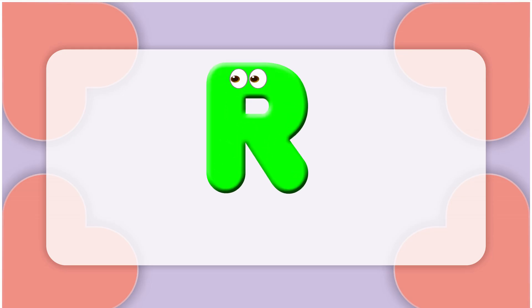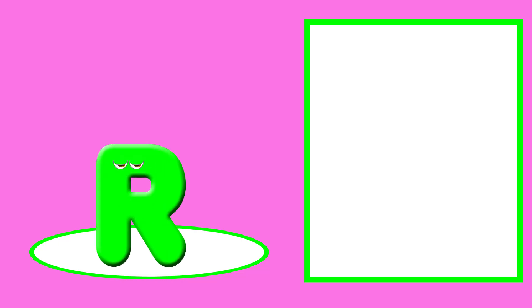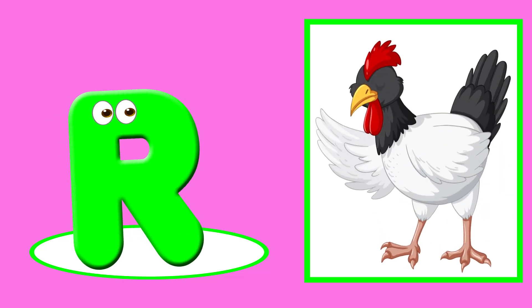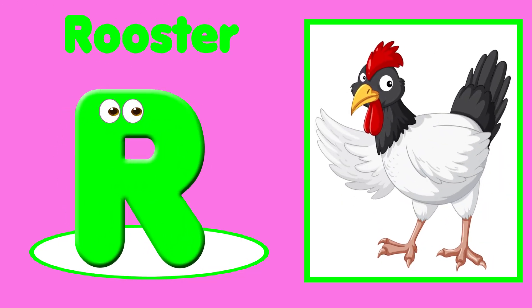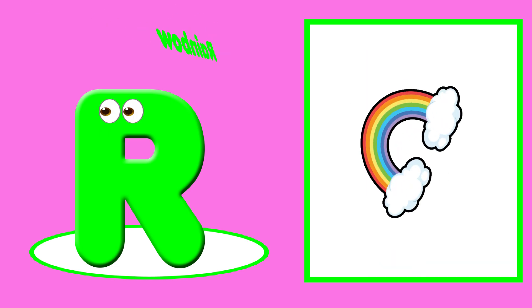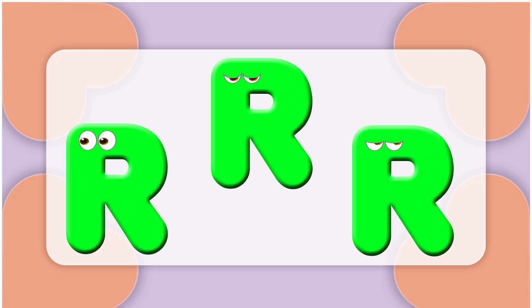This is the letter R. R is for rooster — r, r, rooster. R is for rainbow — r, r.